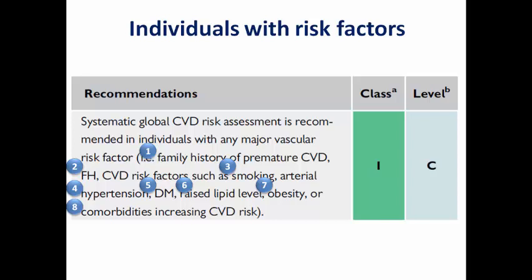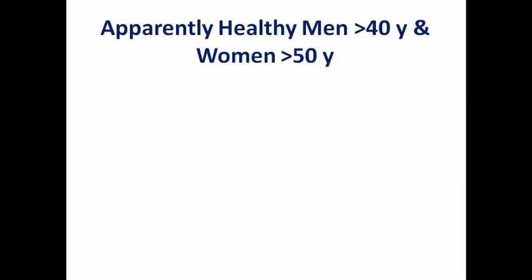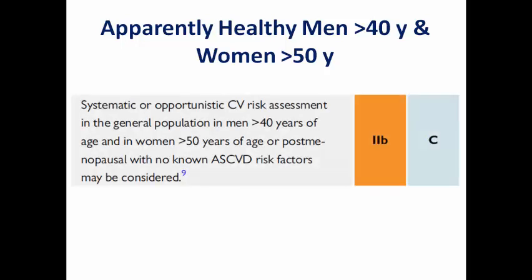For those who have a risk of developing hypertension — for example, those who are overweight or have a family history of hypertension — opportunistic screening of blood pressure is a Class 2a indication. For apparently healthy men over 40 or women over 50 with no known risk factors, the guidelines assign a Class 2b for performing systematic or opportunistic screening in those populations.